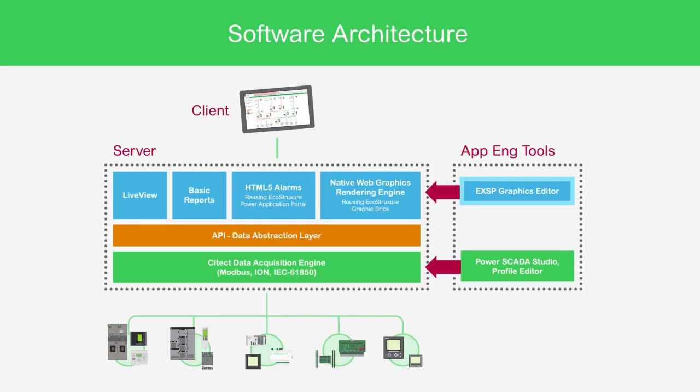You will build graphics files using Graphics Editor and save them in TGML format — TAC Vista Graphics Markup Language. The rendering engine then takes these files, compiles them to HTML5 format, connects them to data from the CT API, and makes the pages available to the web server. These components originated in EcoStruxure Building Operation, which is why you will see references to that software package occasionally.